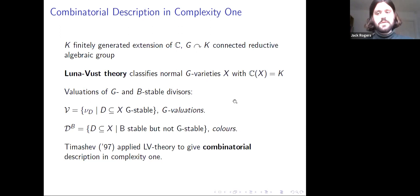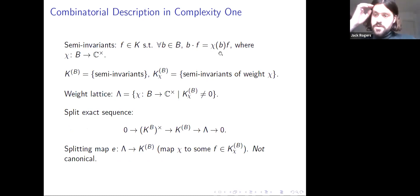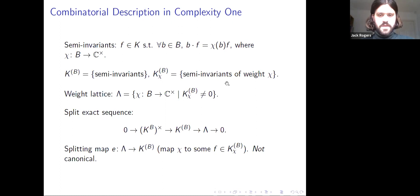Dmitry Timashev in the late 1990s applied Luna-Vust theory to give a combinatorial description for complexity-one G-varieties, a vast generalization of the description of toric varieties by fans. To make this work, we keep track of semi-invariants: rational functions on the variety such that the Borel subgroup acts via a character χ. A useful lemma of Friedrich Knop says that most questions about functions and valuations can be answered by looking only at these semi-invariant functions.